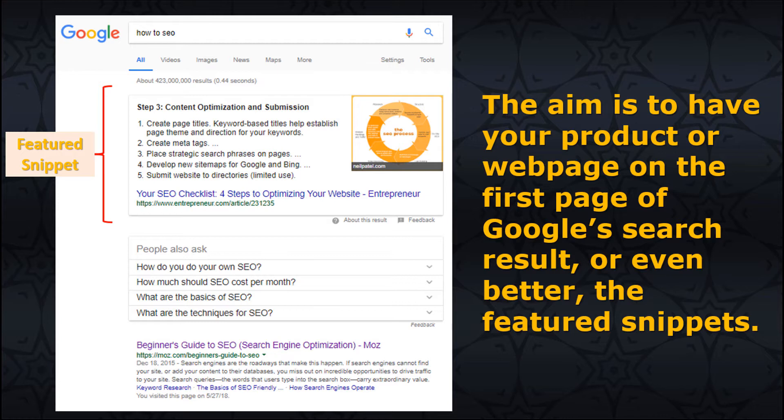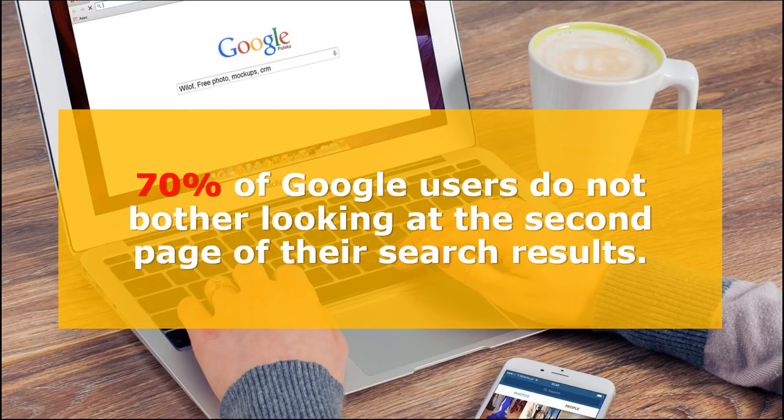These are the clicks you would be receiving mostly if your search results were on the first page. According to research, 70% of Google users do not bother looking at the second page of their search results. If they can't find it on the first page, they would retype their search using more relevant keywords.